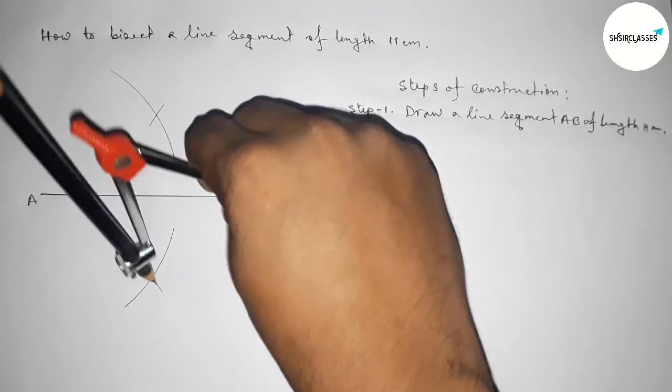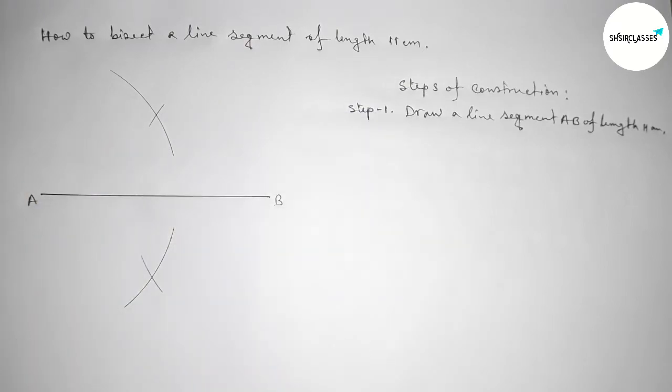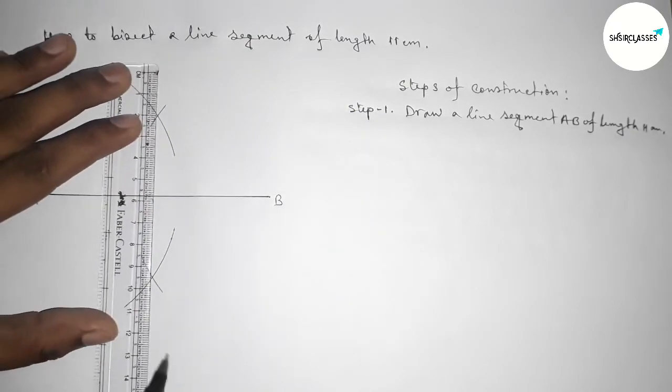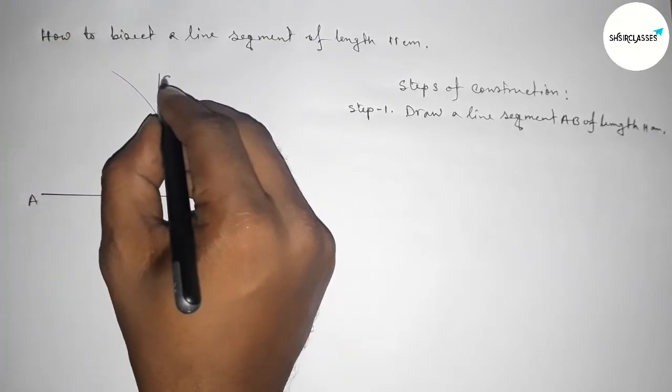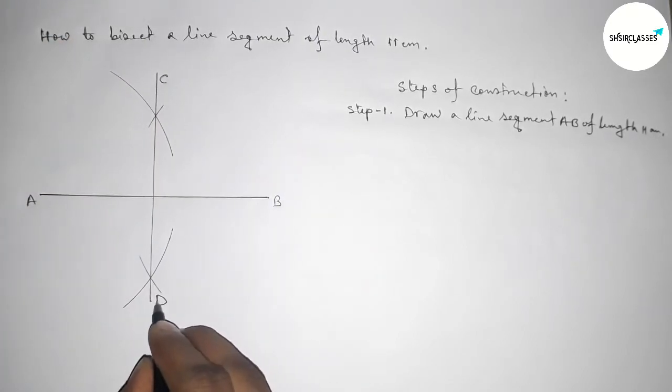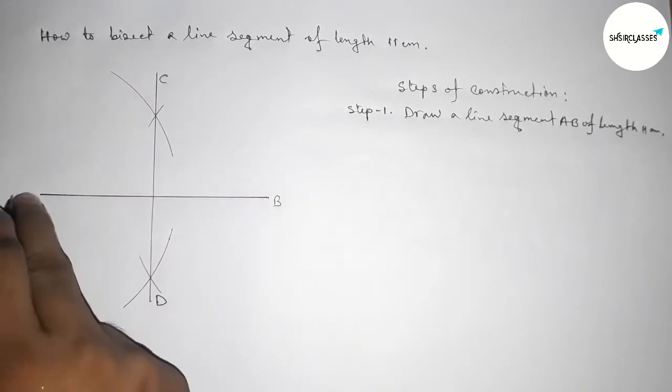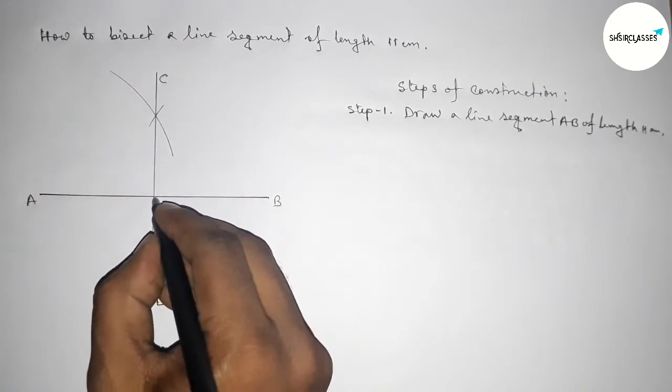So now joining this line. Okay, so taking here point C and here point C and here point D. So here the line CD bisects the line AB at the point P.